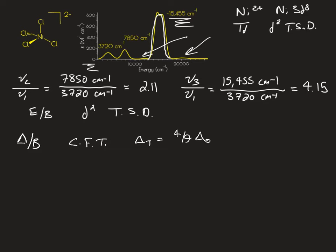Another piece of information that's going to be helpful is that beta in tetrahedral compounds is generally larger than beta in octahedral compounds. Because of this, the delta T over B is going to be approximately 50% of delta O over B.